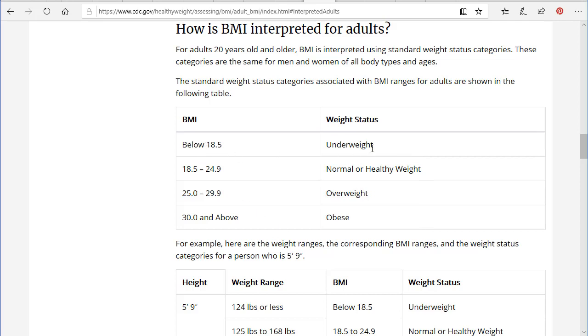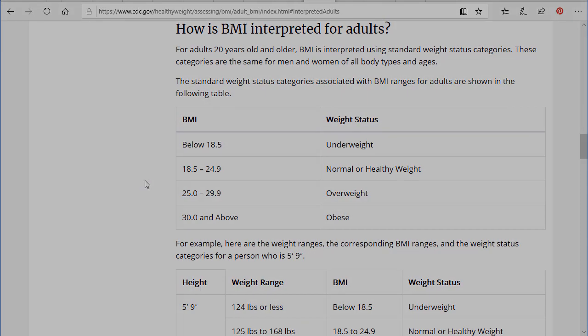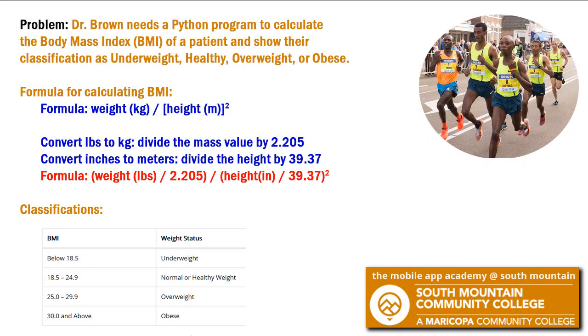If it's below 18.5, they're underweight. 18.5 to 24.9, normal or healthy weight. 25 to 29.9, overweight. And 30 and above is obese. So I take note of my BMI classifications. And now I can use all this information in writing my Python program.